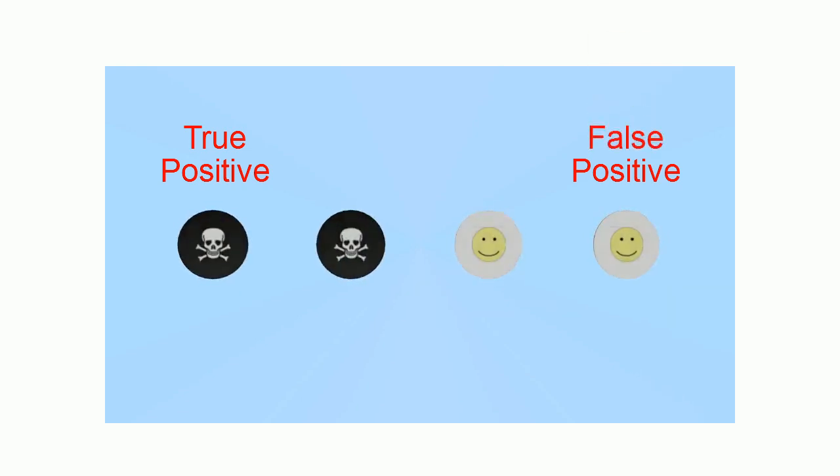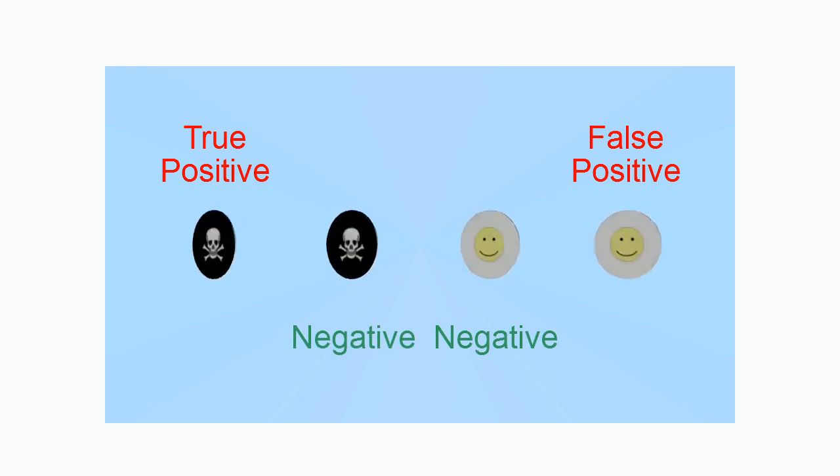Another set of possibilities is that a person could have been marked as not having the condition, a negative result. If they do not in fact have the condition, this is called a true negative.